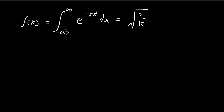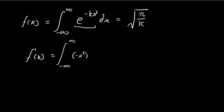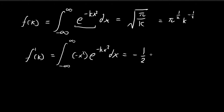Now I'm going to differentiate both sides with respect to k. So I get f prime of k, which equals the integral with the derivative moved inside. Differentiating the integrand gives negative x squared times e to the power of negative k x squared dx. On the right side, the square root of pi times k to the negative one-half differentiates to give negative one-half times square root of pi times k to the negative three-halves. So this integral is equal to that expression.